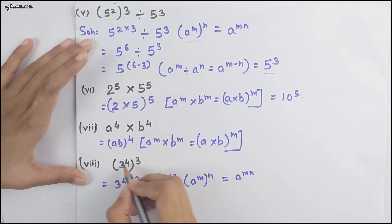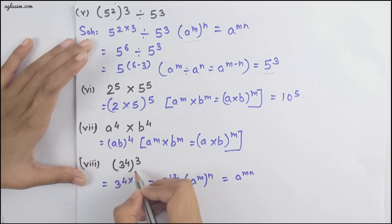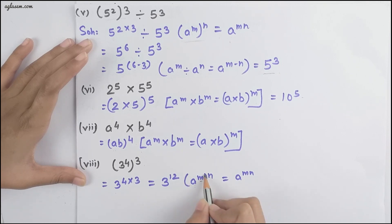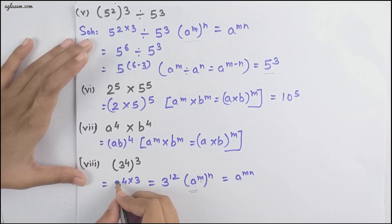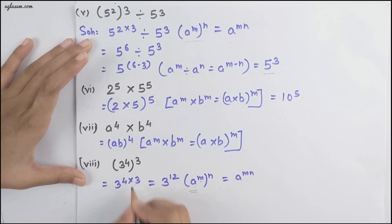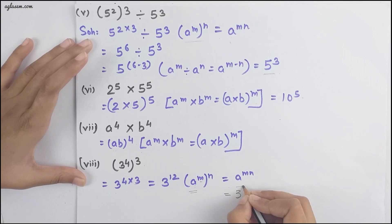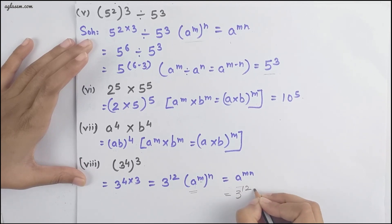Moving to the next question, we have 3 raised to the power 4, whole power 3. Using the formula (a^m)^n = a^(m×n), we get 3 raised to the power 4 into 3, which equals 3 raised to the power 12.